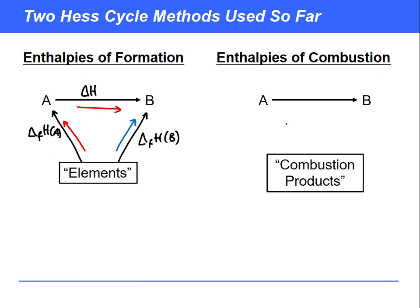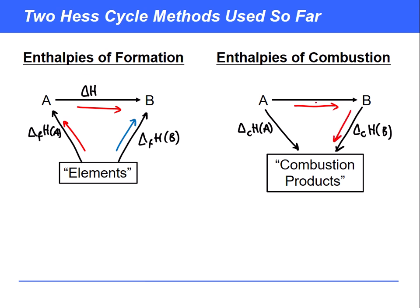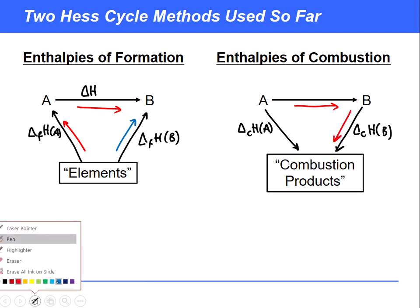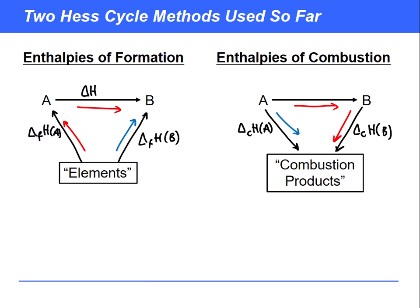In another video we looked at how we can use enthalpies of combustion, where essentially we burn A in oxygen to get the enthalpy of combustion of A, and we can burn B in oxygen as well. If we do that we can find our two routes - the starting point is at A and we find an indirect route to the combustion products, or we go directly along the blue arrow. Hess's law tells us that the total enthalpy change along the red route equals the total enthalpy change along the blue route.